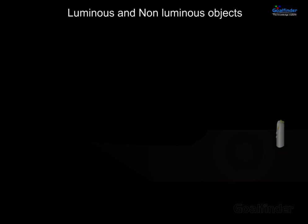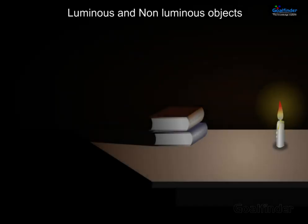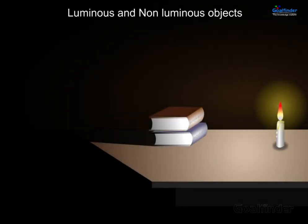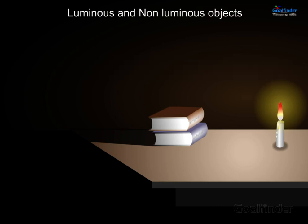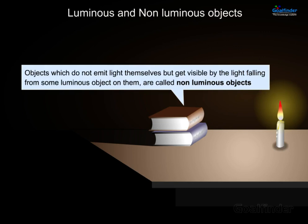Luminous and non-luminous objects. Objects which themselves emit light are called luminous objects. Objects which do not emit light themselves but get visible by the light falling from some luminous object on them are called non-luminous objects.